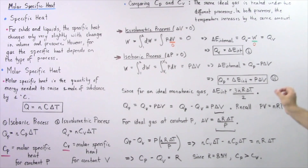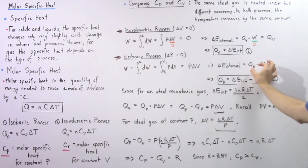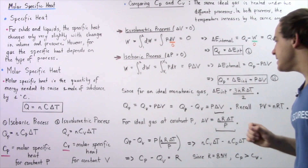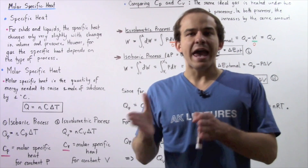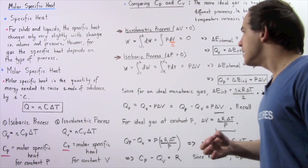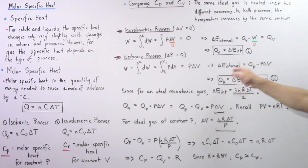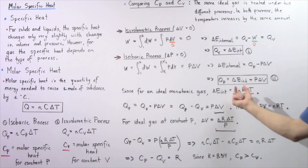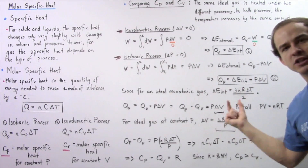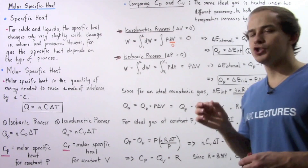In the isobaric process, the change in internal energy is equal to Qp minus W, and W is P multiplied by ΔV. Rearranging, we get Qp is equal to the sum of the change in internal energy of our system plus P multiplied by ΔV. Let's call this equation 2.